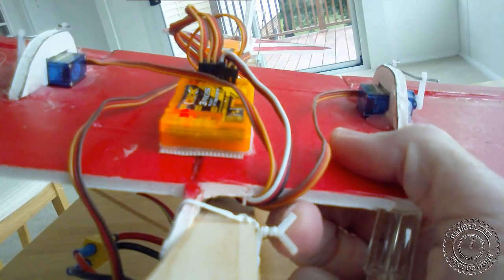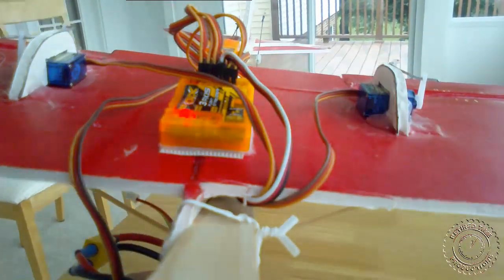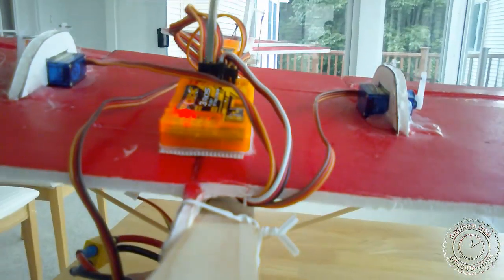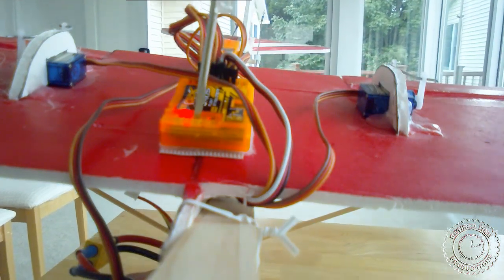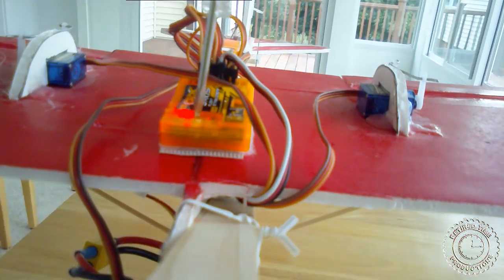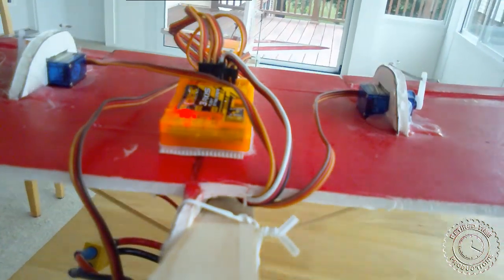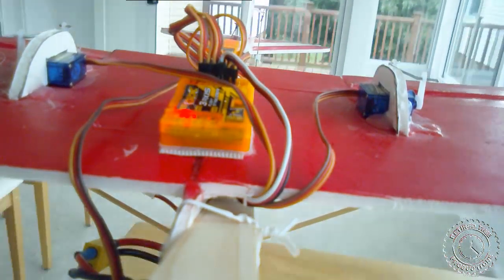And now I'm going to go on and adjust the others in the same manner. So that was the roll pot or the ailerons. Now let's do the pitch, which would be the elevator. Right now you can see the elevator's not doing anything, if you look out at the tail.